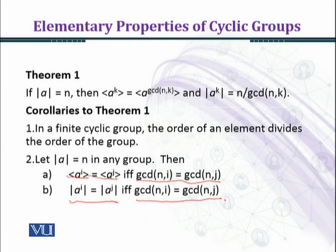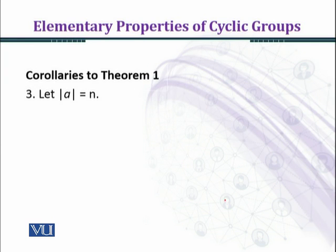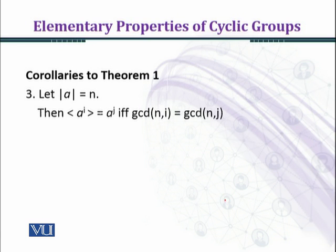Let order of an element a equal n. Then cyclic group generated by a^i equals a^j if and only if gcd(n,i) equals gcd(n,j).